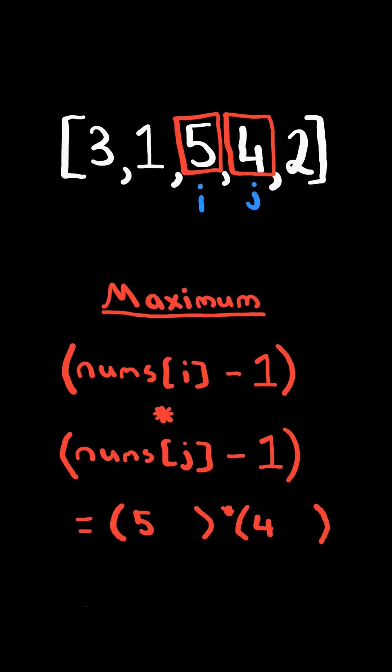For example, if we take 5 and 4, and subtract 1, to get 4 and 3, which results in the product 12.